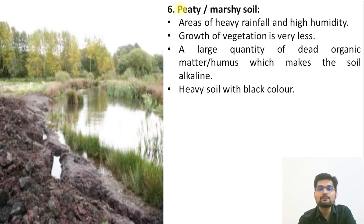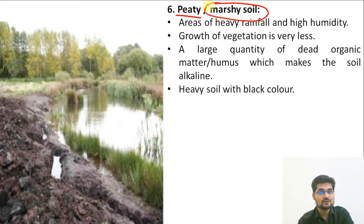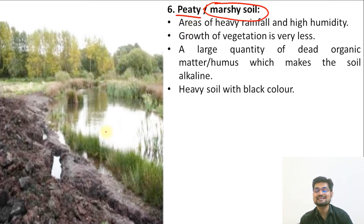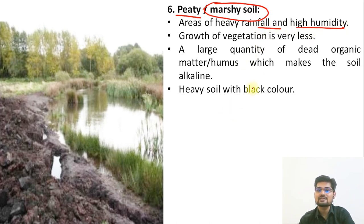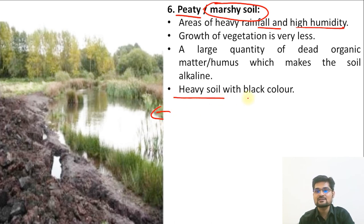The sixth type is peaty soil, also called marshy soil — corresponding to Histosols in USDA classification. Found in areas of heavy rainfall and high humidity, largely in swamp and marsh deposits. These are heavy soils with black color.